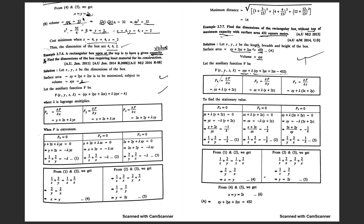Substituting x = y = 2z into the volume constraint xyz = 32: replacing x and y with 2z gives (2z)(2z)(z) = 32, so 4z³ = 32, z³ = 8, and therefore z = 2.